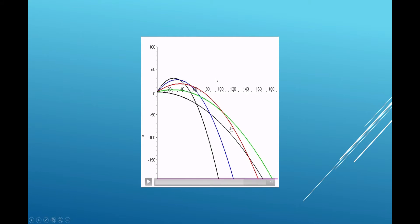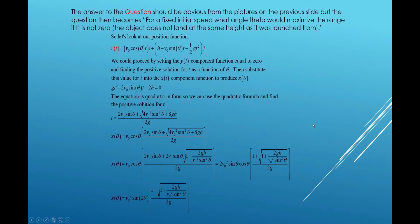What I'm going to do is something a little different than maybe you might have seen before. The answer is clear that 45 degrees is not going to maximize the range if the object is not landing at the same height as it was launched from. So we're going to look at the case where it's landing at a height lower than that which it was launched from.